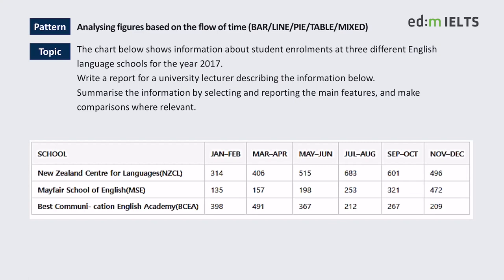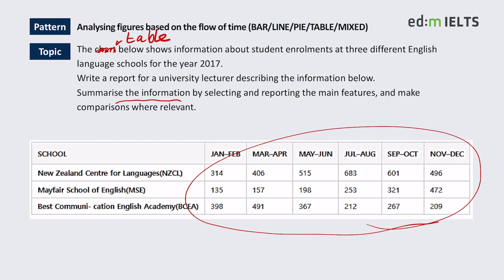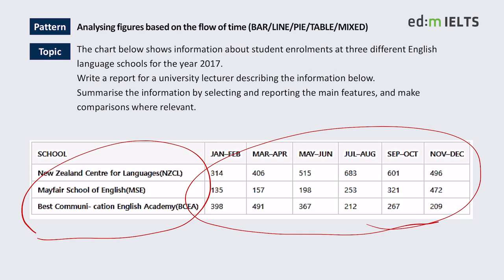Hello everyone, this is Ben again. Today we're looking at a Task 1 table, which you can see here. The table below shows information about student enrollments at three different English language schools for the year 2017. We're supposed to summarize the information — which is not too hard because, unlike some tables, there isn't too much information to look at. We've got to select and report the main features and make comparisons where relevant, so comparing enrollment figures for three different language schools. Many of you watching will study at English language schools to prepare for the IELTS exam or just to learn English in general.